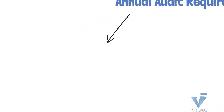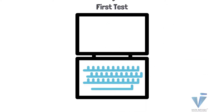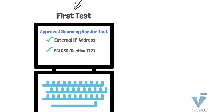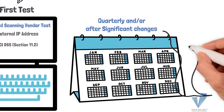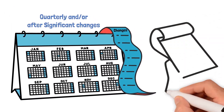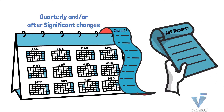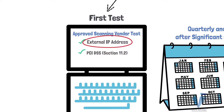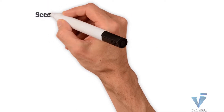The first test is ASV — Approved Scanning Vendor — testing of your external IP addresses. That is under section 11.2 of PCI DSS and is to be done quarterly and after any significant change. So if you've made six or seven major changes during the year, you need to show six or seven ASV reports as well. One important point: ASV is only to be done for your externally exposed IP addresses. It is wrong — and unethical — to apply ASV to internal IP addresses.